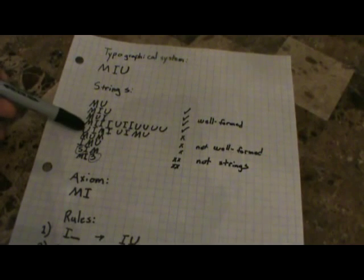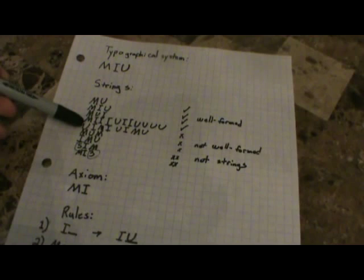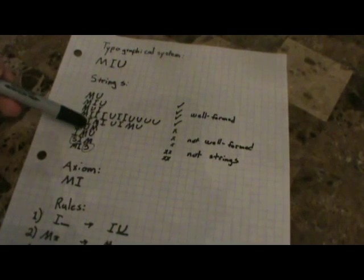We've got some not-well-formed strings here. This one doesn't start with M. This one does, but it also has an M later on, so that's no good. And this one also does not start with M. Even though all three of these contain the right characters, they are not well-formed strings — we won't be able to do anything with them. So all we are really interested in are the well-formed strings. Now, what we're going to be doing is taking well-formed strings and applying rules to them.